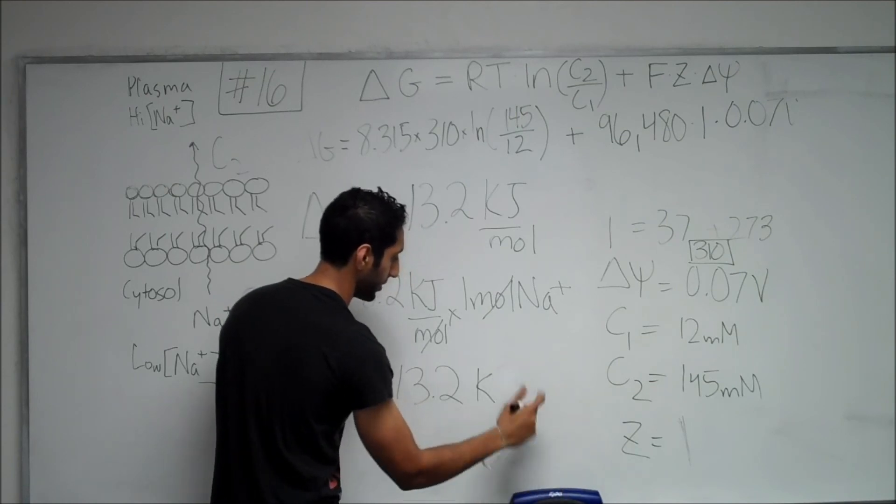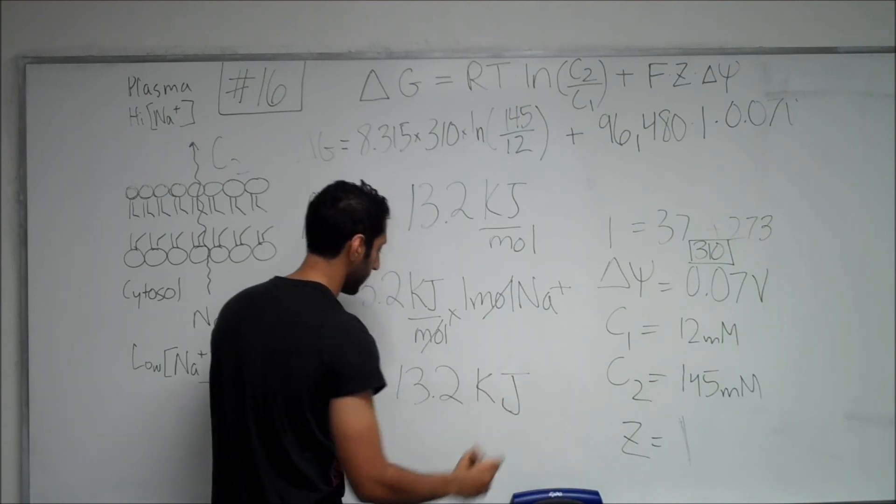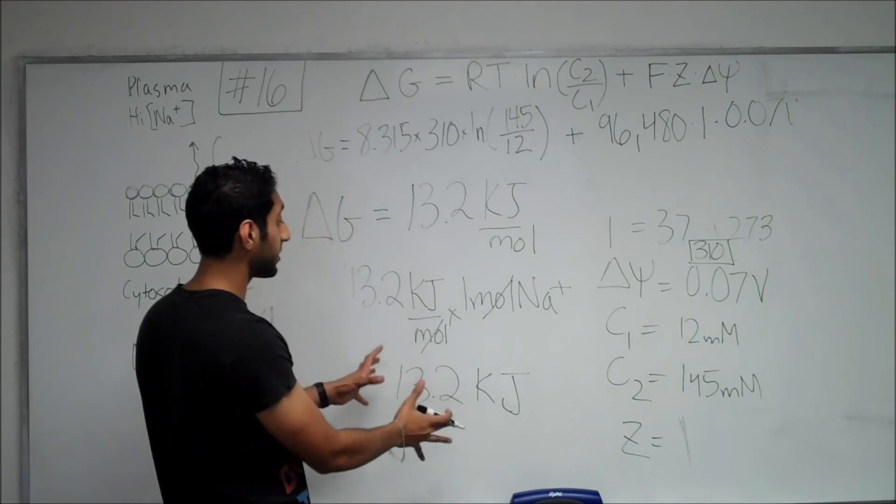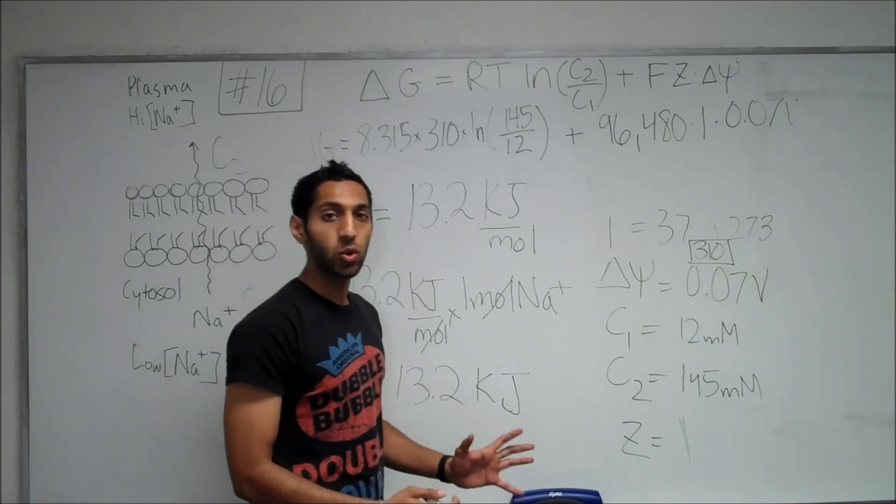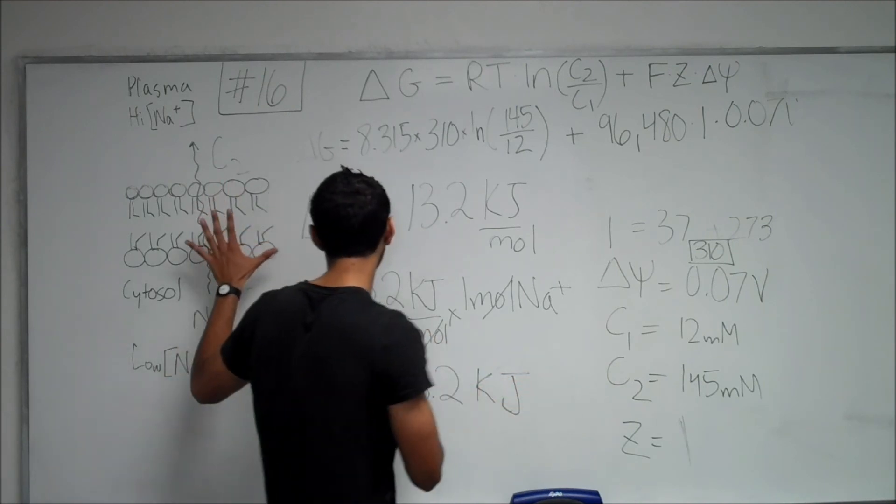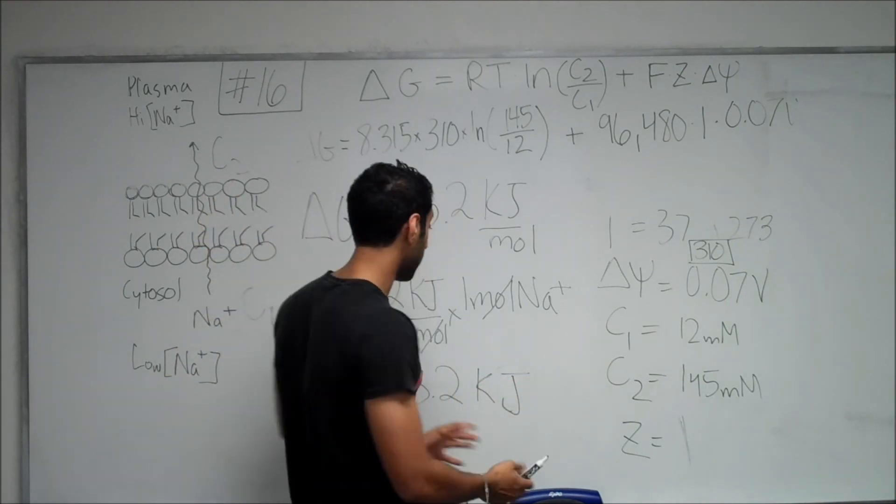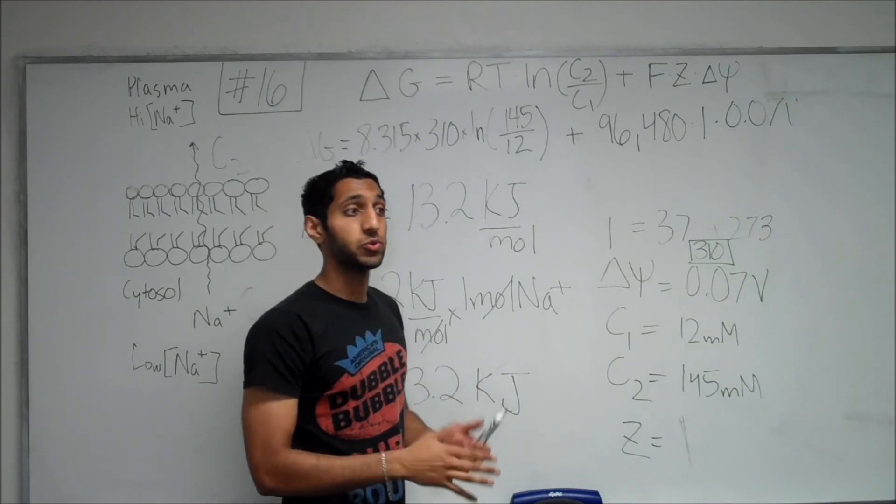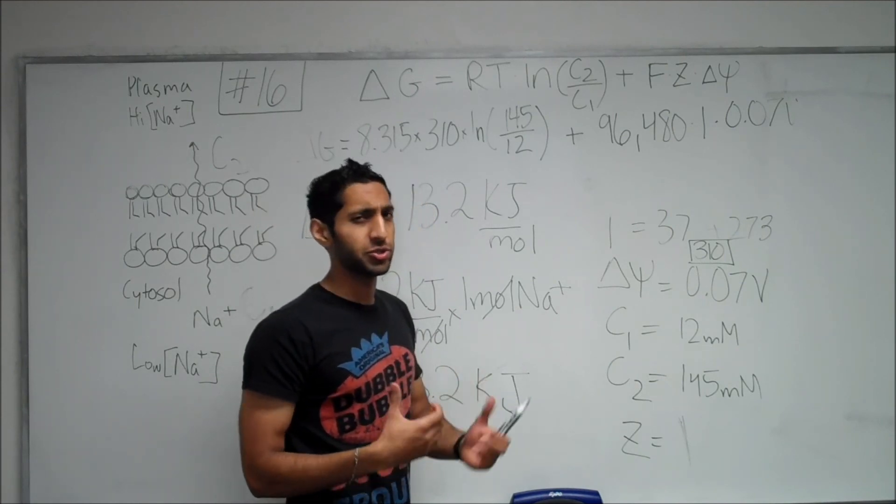And so, the moles cancel out, and you should just get 13.2 kilojoules. That was a bad idea. And so again, this is the amount of free energy change that's required to pump sodium ions against this concentration gradient over here. And again, we have a positive answer, so we know that our prediction was correct.